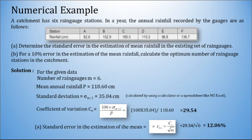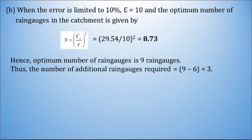Now for the second question, if we assume that the error is limited to 10 percent, that is the value of epsilon equals 10, and then we have to find out the optimum number of rain gauges, we can use the formula N equals Cv upon epsilon bracket square, which is equal to 29.54 divided by 10 bracket square, which comes out as 8.73. So we can say that the optimum number of rain gauge stations for the given area comes out as 9. Since already 6 rain gauge stations are pre-installed, then the number of additional rain gauge stations required will be 9 minus 6, that is 3. Such kind of examples can be asked in your university examinations.